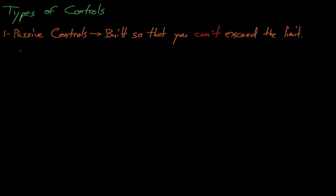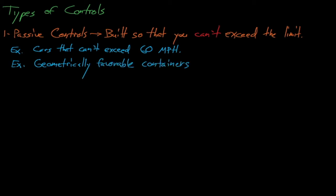Passive controls involve building your system so that it's not physically possible to exceed some limit. For example, designing a car that cannot physically exceed 60 miles per hour will ensure that it always follows the speed limit. In criticality safety, geometrically favorable containers are a commonly used passive safety control mechanism. A geometrically favorable container is a container whose size is too small to fit enough material to reach criticality. The tanks from the Mayak 1953 accident were able to hold more than one critical mass of plutonium nitrate solution, and had they been designed to be geometrically favorable, then this accident would not have been possible.